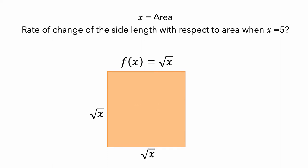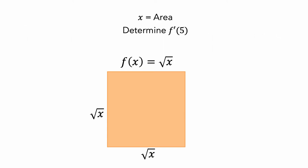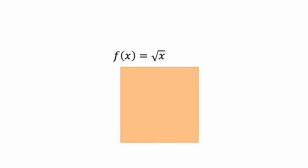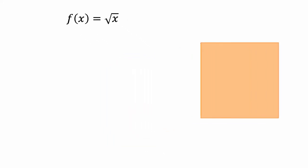So essentially, our task is to determine the instantaneous rate of change of f with respect to x when x equals 5. The first step in doing this is to represent the average rate of change of the square's side length with respect to its area. Right now, the area of the square is 5 square centimeters, so the length of each side is the square root of 5 centimeters, which we can write as f of 5.